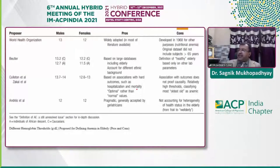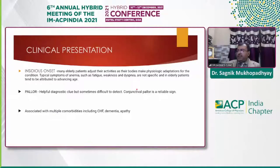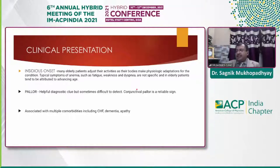Several criteria have been used in studies aside from WHO — Butler, Caton, and Andres et al. also proposed thresholds, with results similar to between 13 and 12 g/dL for male and female patients. The clinical presentation of anemia in the elderly population is usually insidious in onset. Many elderly patients adjust their activities and make physiological adaptations so that they can tolerate the conditions, and typical symptoms such as fatigue, weakness, and dyspnea are not specific.